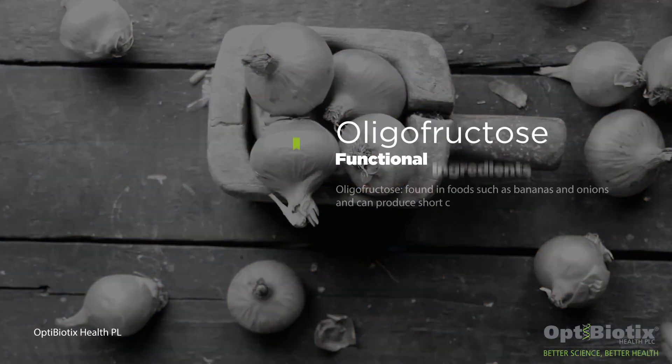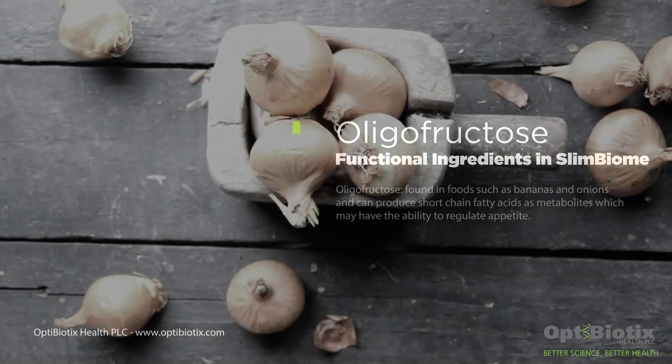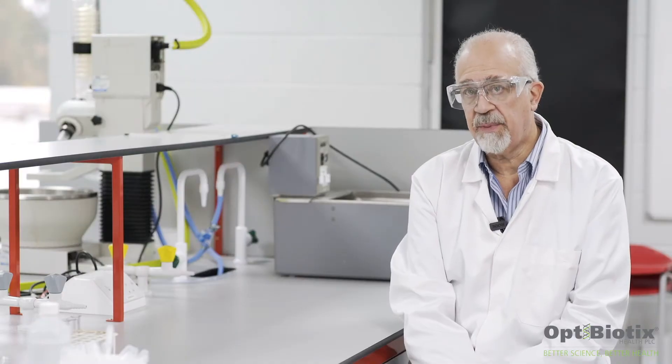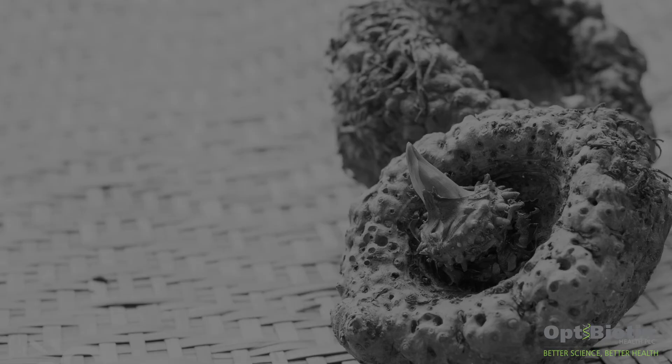An example of a prebiotic is oligofructose. Oligofructose fermentation by the gut microbiome will produce short chain fatty acids as metabolites. And we believe that these short chain fatty acids have the ability to regulate appetite.